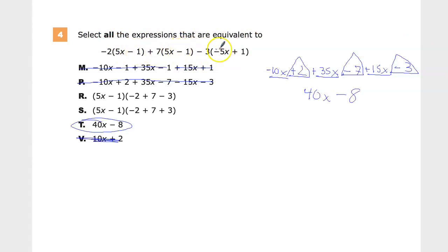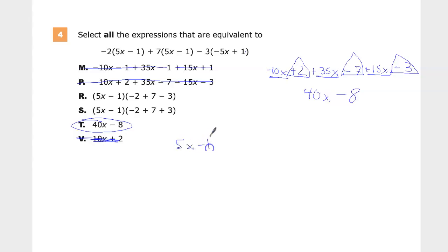And the only difference here is that signs are completely different. So if I have 5x minus 1 and 5x minus 1, and then this is negative 5x plus 1, you'll notice that this is negative and this is positive.